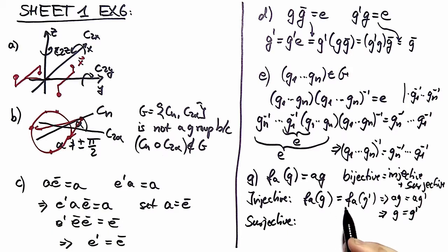The surjectiveness can be shown similarly. We have f a of g and we say this is an element s. The rearrangement theorem allows us to write s as a times g. So we've shown there is a unique element g which can be traced back to the resulting element s. Injectiveness and surjectiveness implies bijectiveness, so we've shown that this map is bijective.